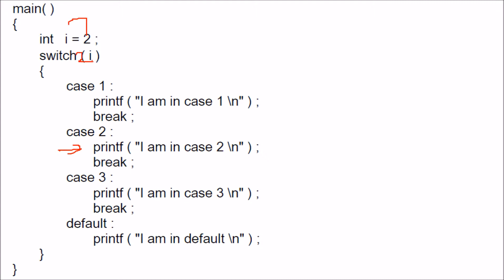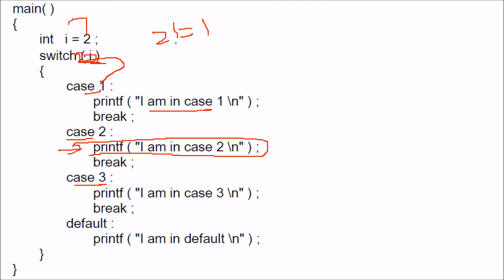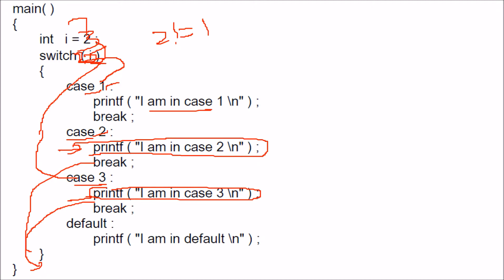With i equal to 2, case 1 does not match since 2 is not equal to 1. We go to case 2. Since 2 matches, this line will be printed. Then we will not go to case 3 because we have a break — we come out of the loop. If i was 3, it would not match 1 or 2, it would come to 3, that line would be printed, and then the break takes us out. So the corresponding matching case will only be printed.